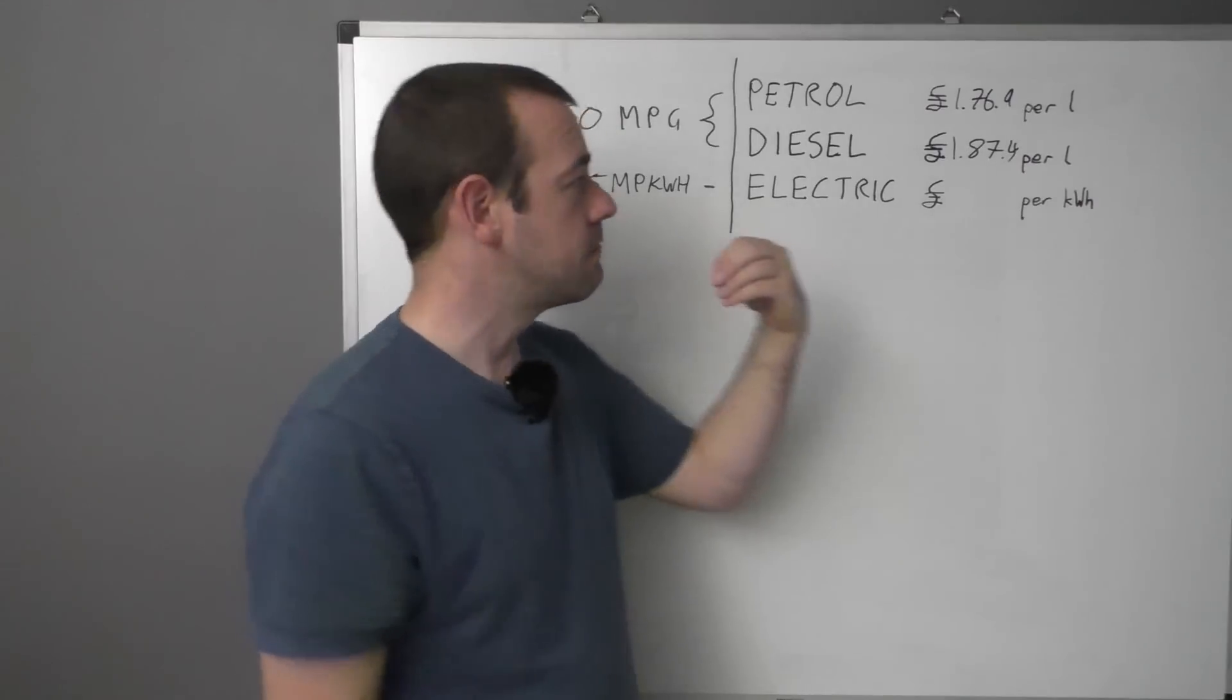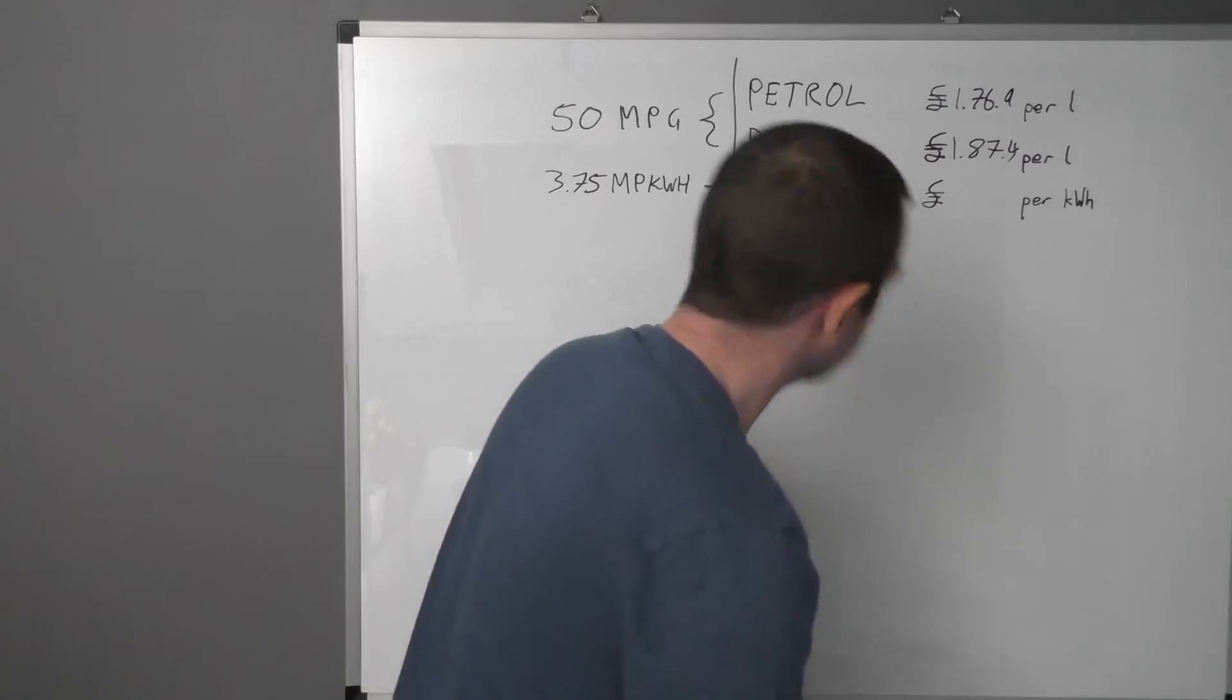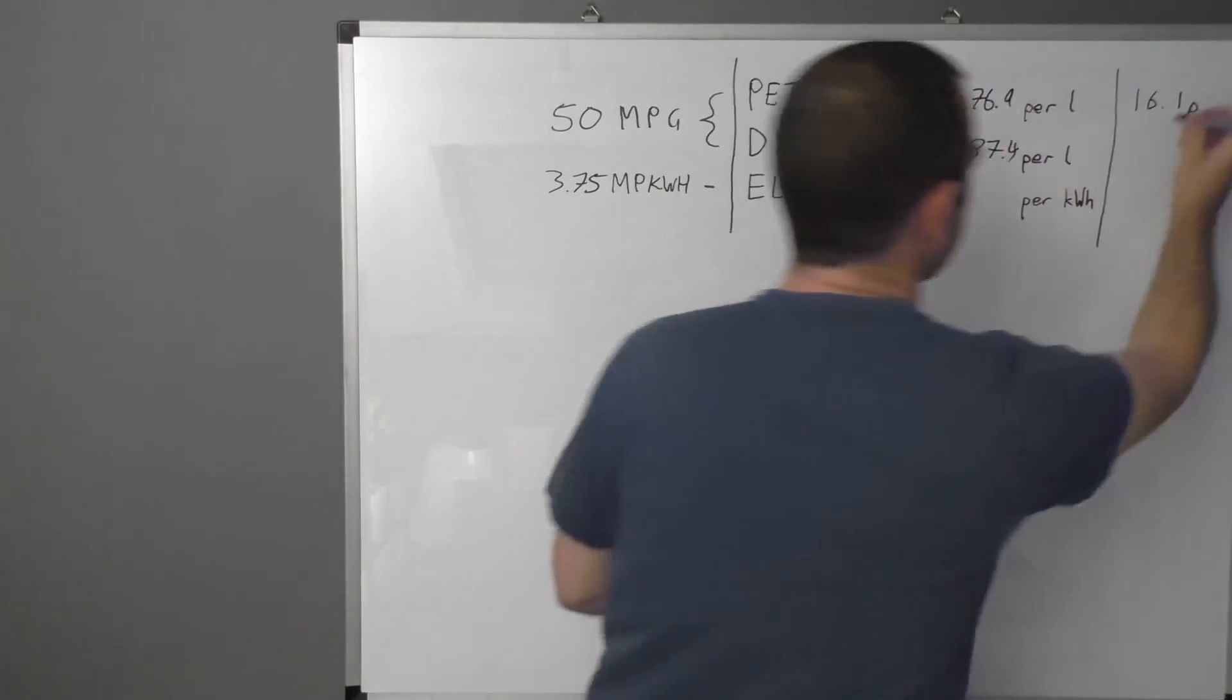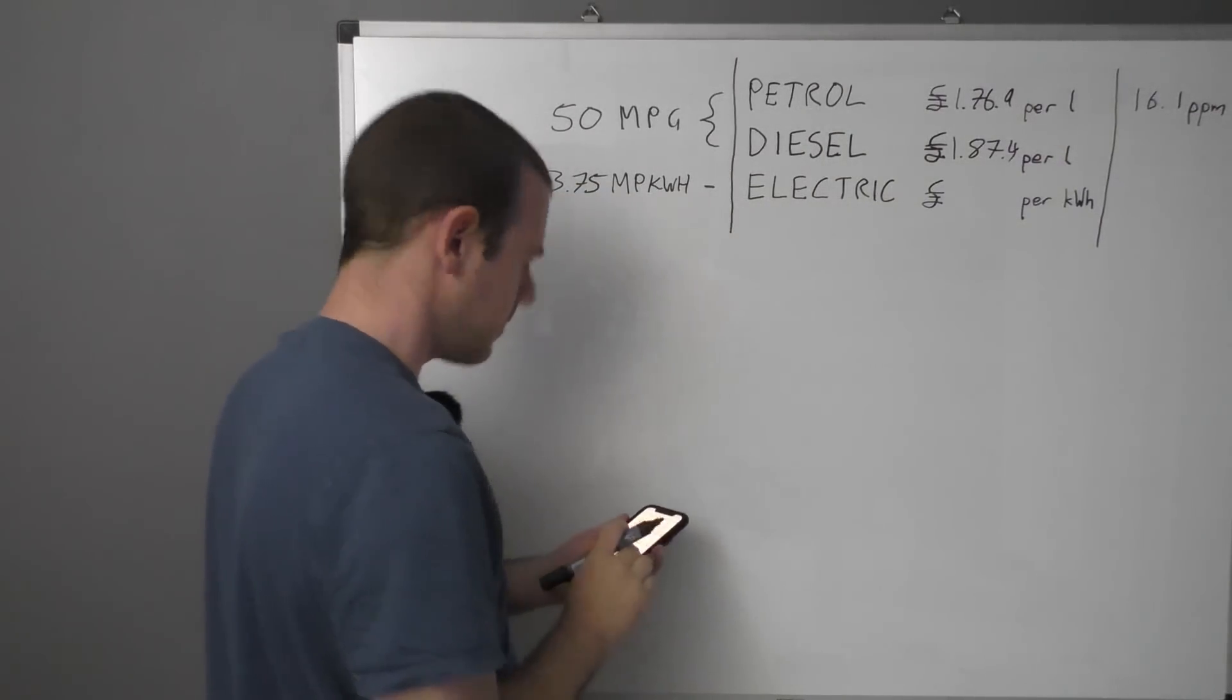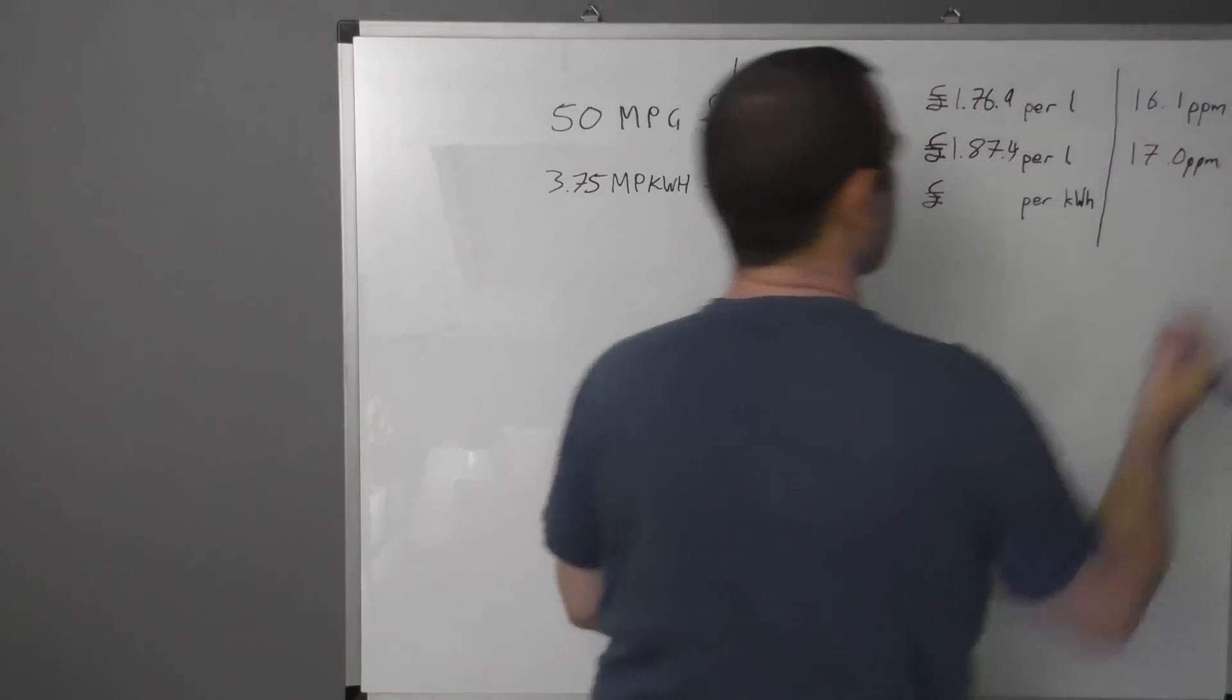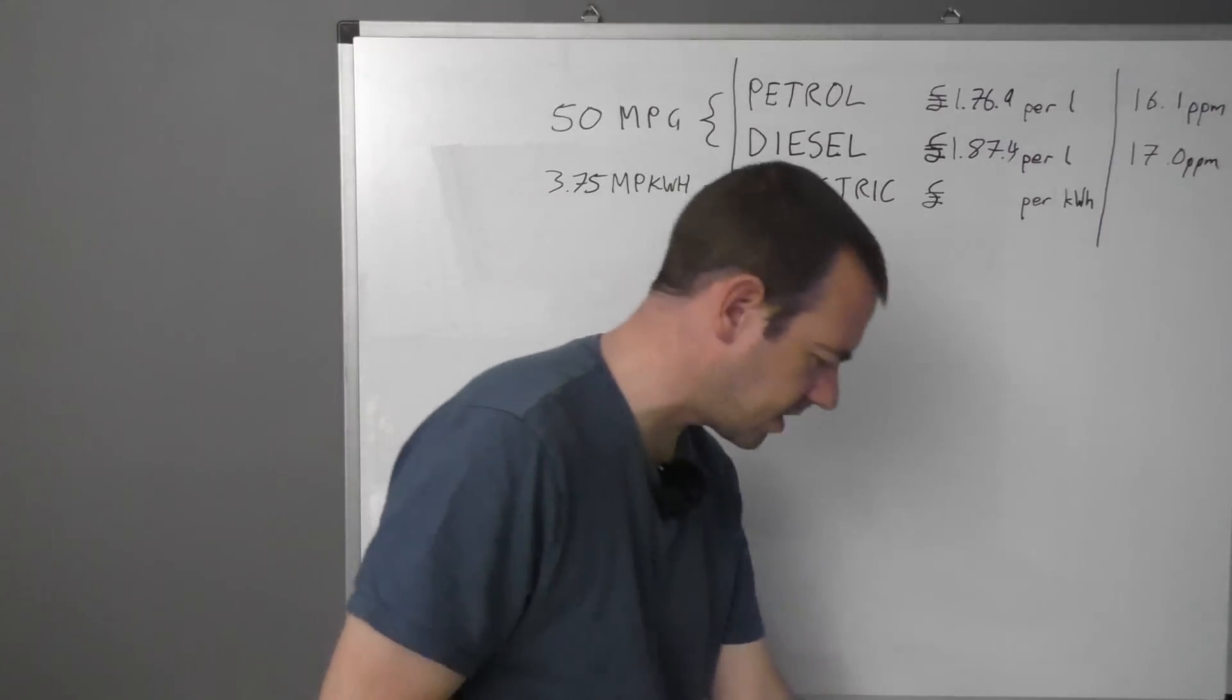And for that, I'm going to use pence per mile. So using this and this, I can figure out that the pence per mile for petrol is 16.1 pence per mile. And for diesel, that's a bit more expensive of course, 17.0 pence per mile.